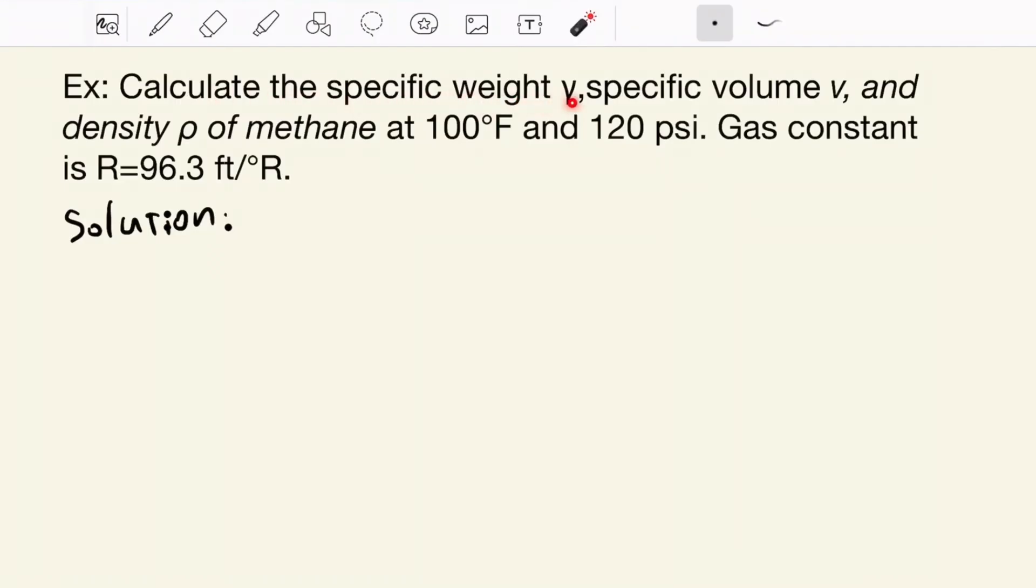Calculate the specific weight gamma, specific volume V, and density rho of methane at 100 Fahrenheit and 120 pounds per square inch. Gas constant is R, which equals 96.3 foot over Rankine degree.